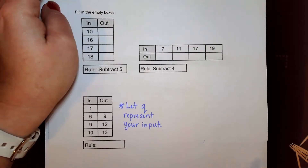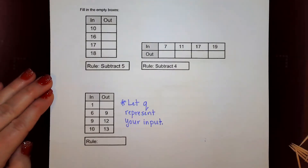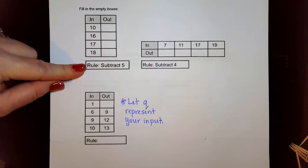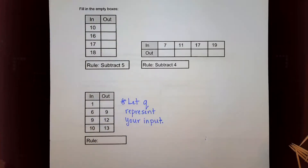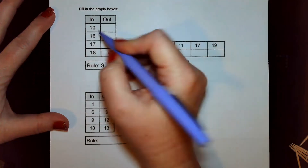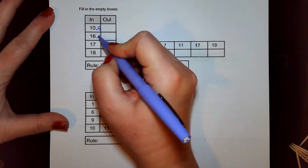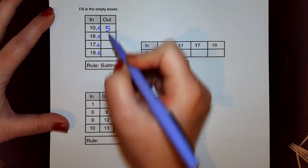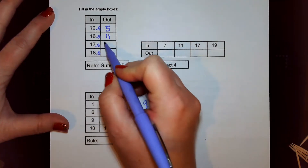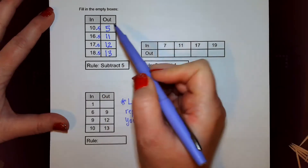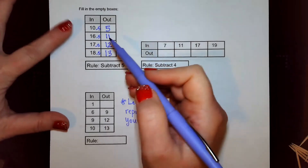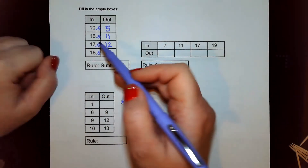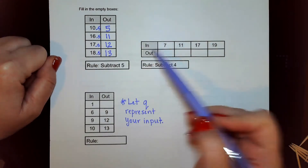Let's look at a couple more examples involving input/output tables that are already made — you might want to write these down. We're going to fill in the empty boxes. They give us the input, they tell us the rule — subtract five — and we find the output. All we do is subtract five from each input: 10 − 5 = 5, 16 − 5 = 11, 17 − 5 = 12, 18 − 5 = 13. Notice there's no vertical pattern because the distance between 10, 16, 17, and 18 isn't equal — don't look for a pattern that way, you go from input to output.